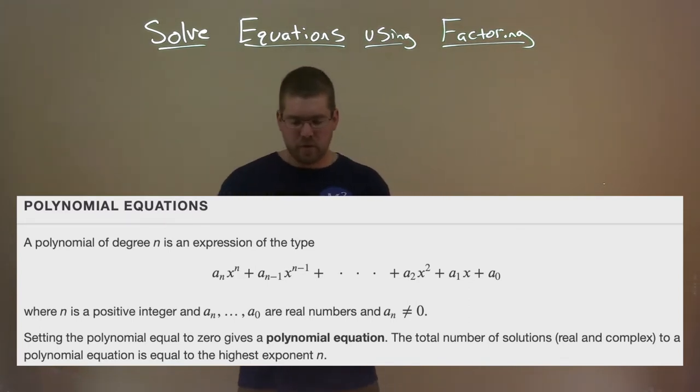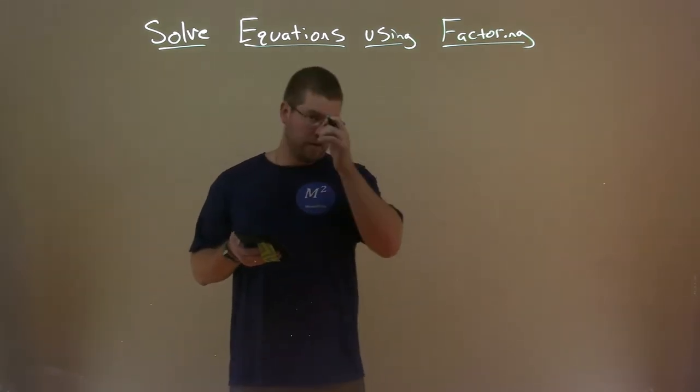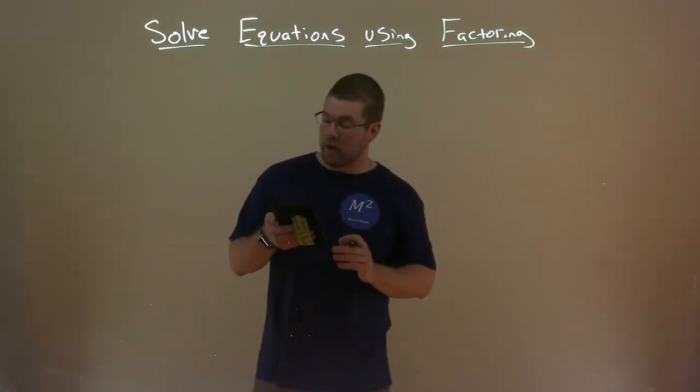The total number of solutions, real and complex, to a polynomial equation is equal to the highest exponent, n. Alright, so now you've got a little definition here. Let's go solve a polynomial by factoring.